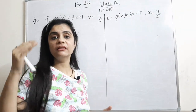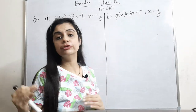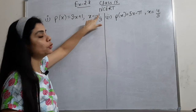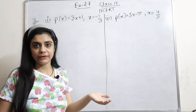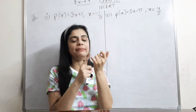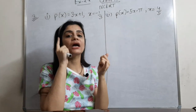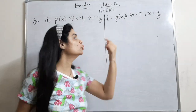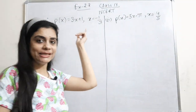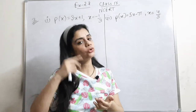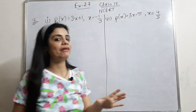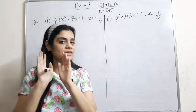Following means: whether x = minus 3 is a zero or not — that's what I have to find out. That means I have to do checking. I had explained two types of questions in the last video: if you have to check whether a value is a zero, put that point into the polynomial. If the answer comes to 0, then x = -1/3 is the zero of the polynomial.